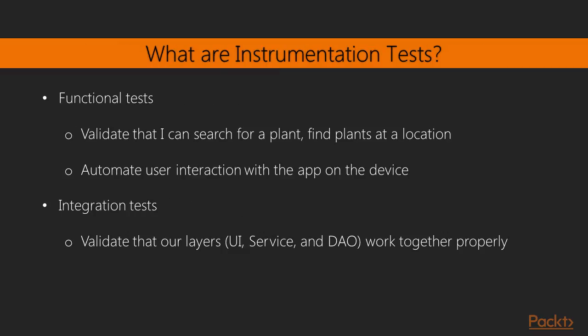What are instrumentation tests? They can be functional tests that validate that you can do some kind of feature in our application. Remember the triangle of features, quality, and time — pick any two, but one must be quality. If we're talking about features, we're thinking about something that the user can do. In this kind of test, we want to automate what the user does with the application on the device — enter text, press a button, validate results.